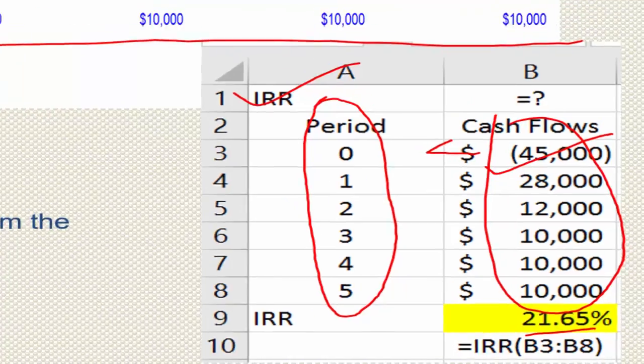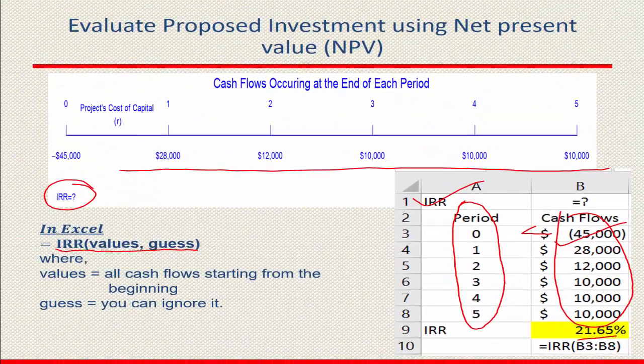With that, you get 21.65%. This means that if you undertake this investment, it will generate a 21.65% return per annum. Whether to undertake this project depends on the cost of capital. If the cost of capital — meaning the cost of money borrowed to fund this project — is less than or equal to 21.65%, then it is beneficial to take this project. But if the cost of financing is more than 21.65%, then it is not beneficial, because the project returns less than what you pay for your borrowed money.